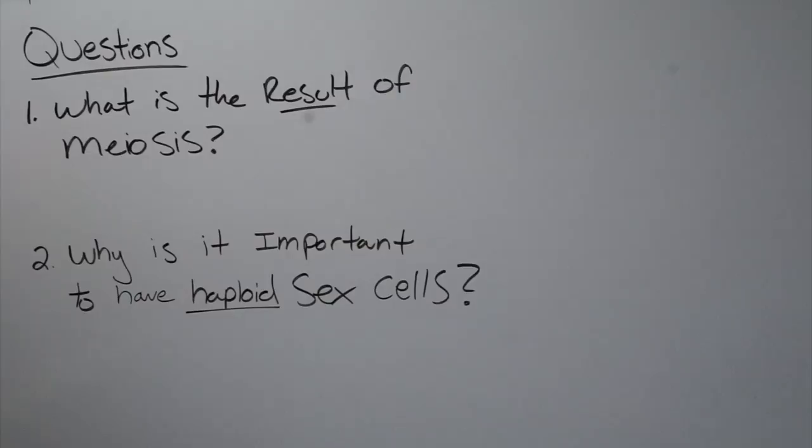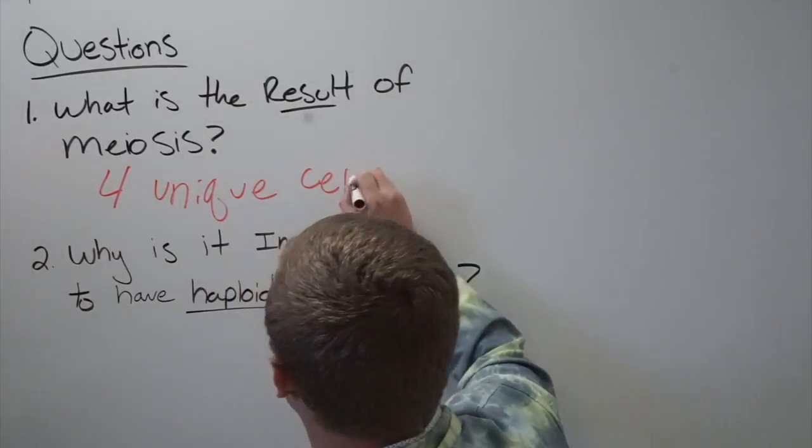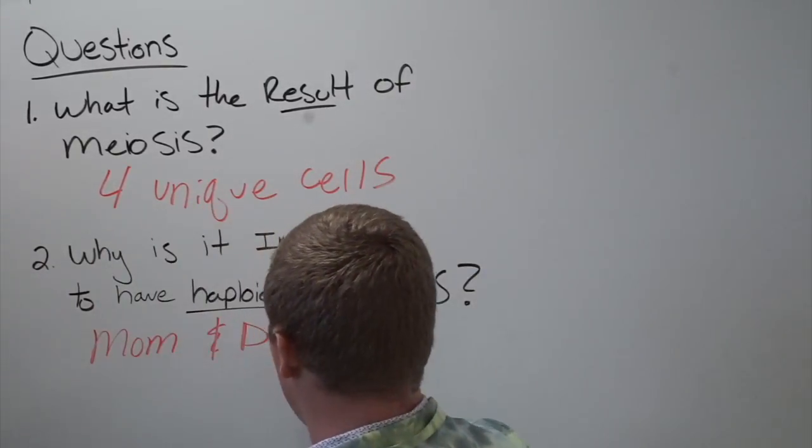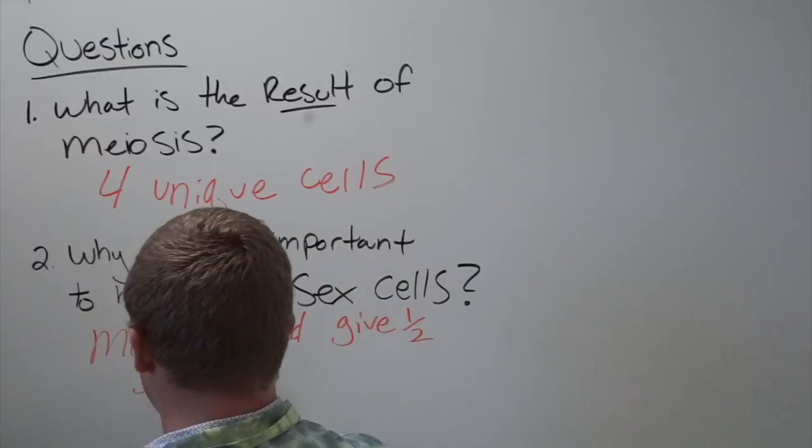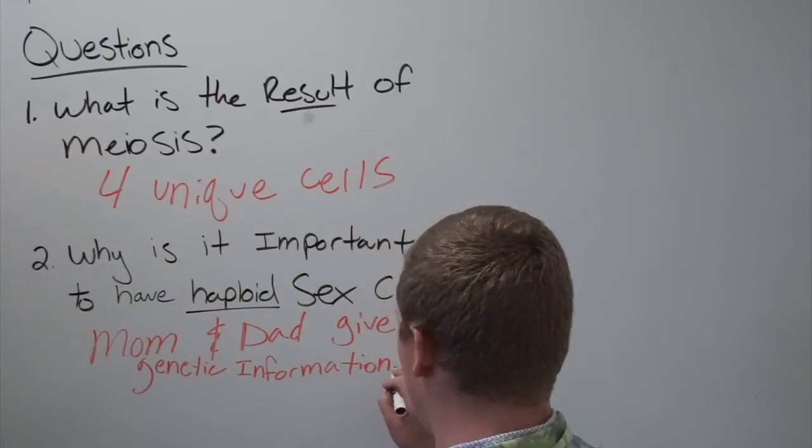What is the result of meiosis? To create 4 unique cells. And why is it important to have haploid cells? So that way mom and dad can both give one half their genetic information.